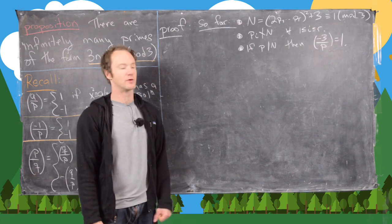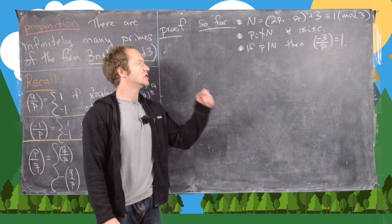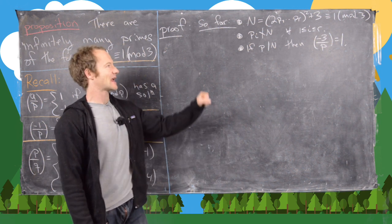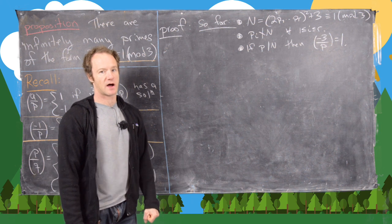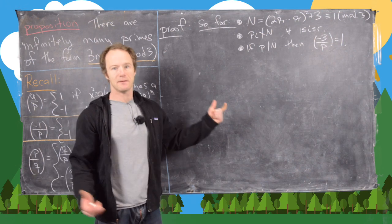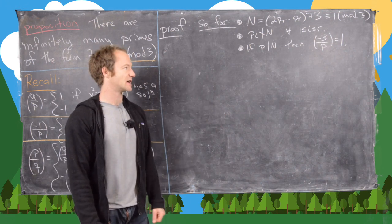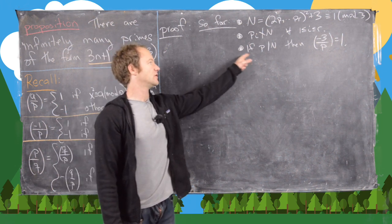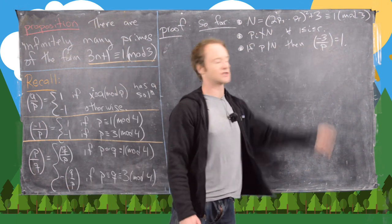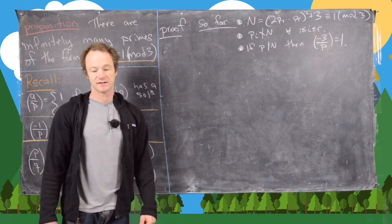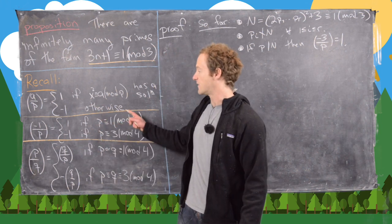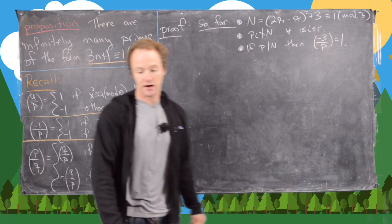Let's recap where we are. We set N equal to twice the product of all primes of the form 1 mod 3, squared, plus 3. That gave us a new number congruent to 1 mod 3, not divisible by any of our primes, but it must have a prime divisor. We argued that any prime divisor p satisfies: negative 3 is a quadratic residue mod p, i.e., the Legendre symbol negative 3 by p equals 1. Now we'll use quadratic reciprocity to finish the proof, splitting into two cases.